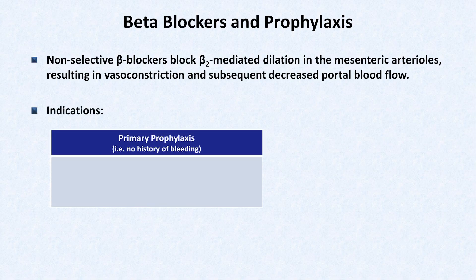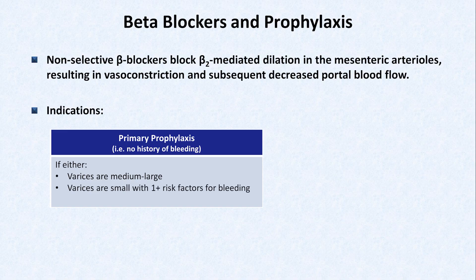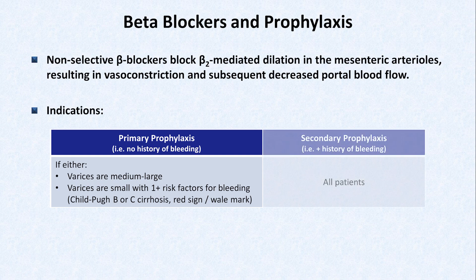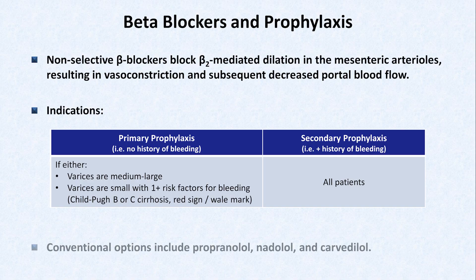Indications for primary prophylaxis — that is, for patients with varices that have never bled before — include the presence of medium or large varices, or if they are small but the patient has one or more risk factors for bleeding, such as Child's class B or C cirrhosis, meaning moderate to severe, or a red sign, also known as a wale mark, which is a focal red dot or splotch on a varix when viewed endoscopically. Everyone who has a history of a variceal bleed should be placed on a beta blocker, irrespective of varix size or other risk factors. Conventional options include propranolol, nadolol, and carvedilol.